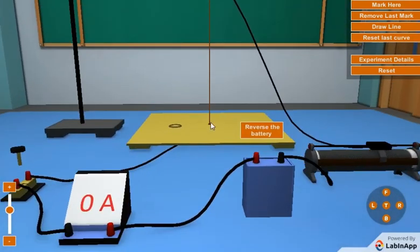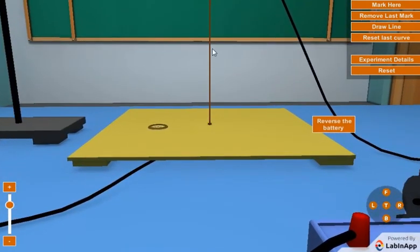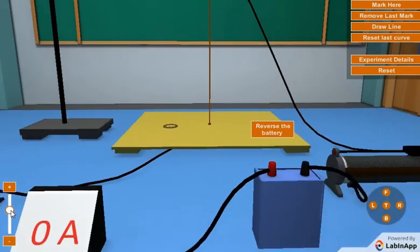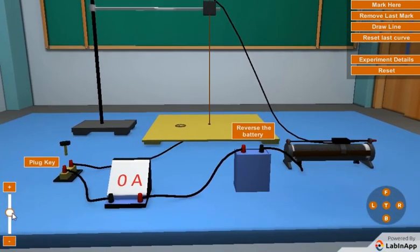The position of the wire XY must be normal to the plane of the rectangular cardboard. Insert the key in the plug to let the current flow in the circuit.